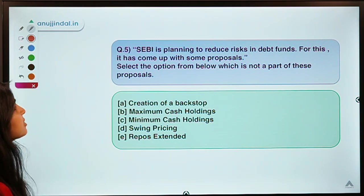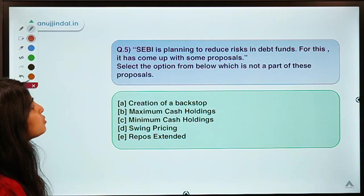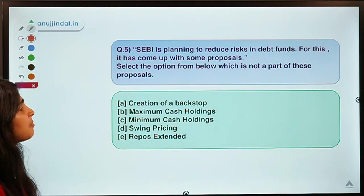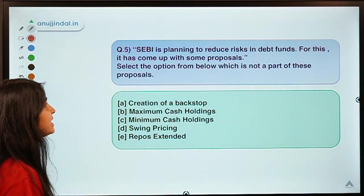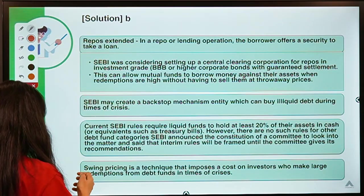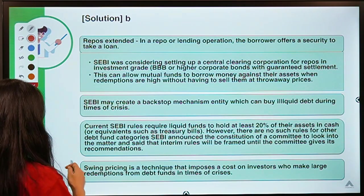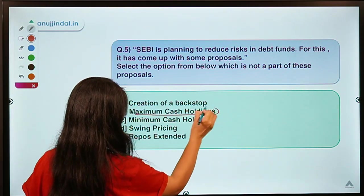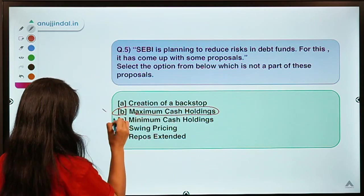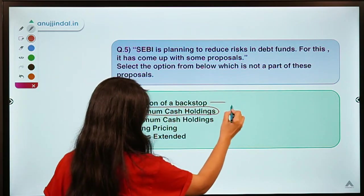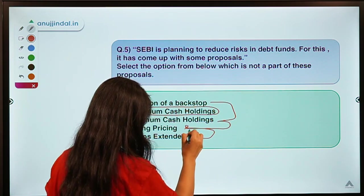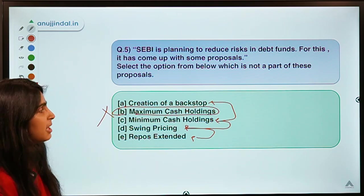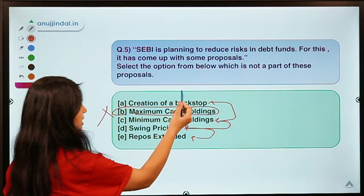Moving ahead to the last question: SEBI is planning to reduce risks in debt funds and has come up with some proposals. Select the option which is NOT a part of these proposals. The solution is option B — maximum cash holdings. Except for that option, all other four are the measures being taken by SEBI.